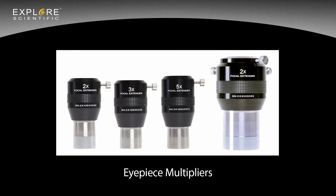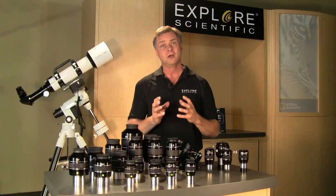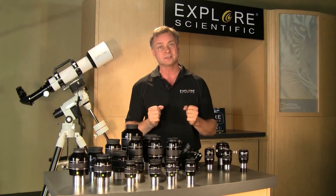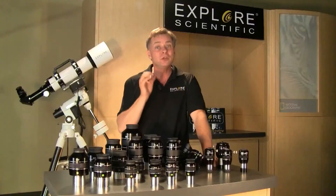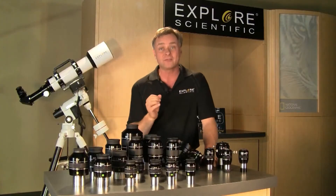What are eyepiece multipliers? Increasing magnification of your lower power eyepieces can also be done by adding focal extenders or a Barlow lens. The advantage is that these devices can increase the magnification of all your eyepieces, but the eye relief will remain unaffected. This is especially useful if you need long eye relief of your long focal length eyepiece but you want more magnification.